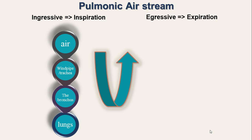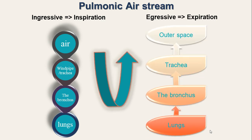When we breathe in, the muscles of the chest expand. When we breathe out, the air from the lungs goes out through the bronchi into the bronchus, then into the trachea and then into the outer atmosphere. The process of breathing the air out of the lungs is called expiration.